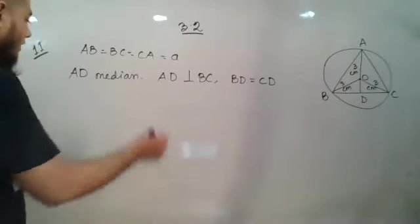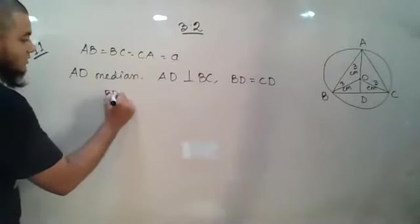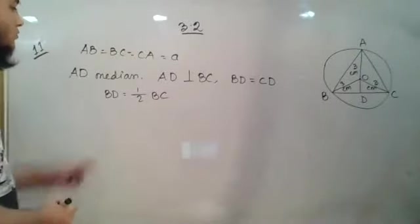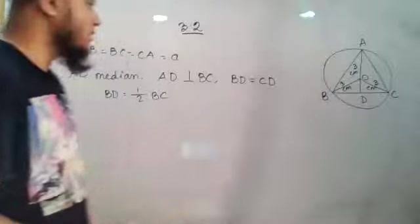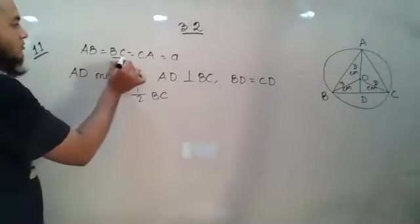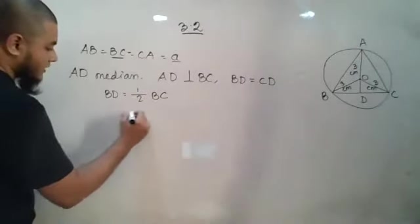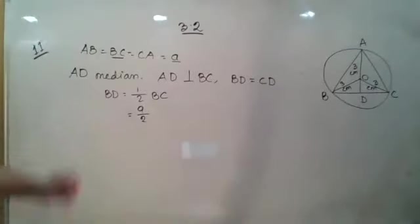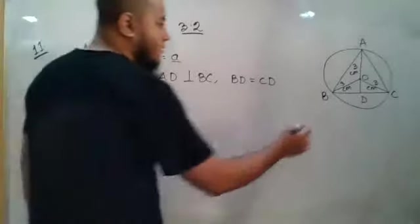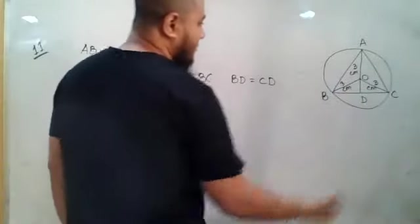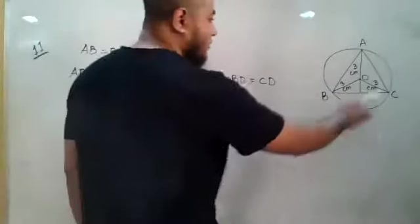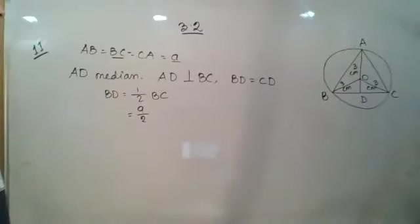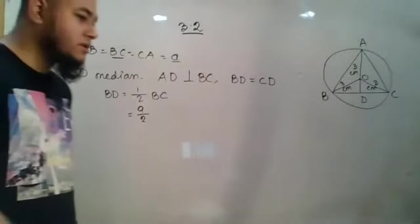The median also bisects BC, meaning BD = DC. So BD = half of BC = a/2. OB is 3 centimeters, which we already know. Now let us try to find the length of OD.